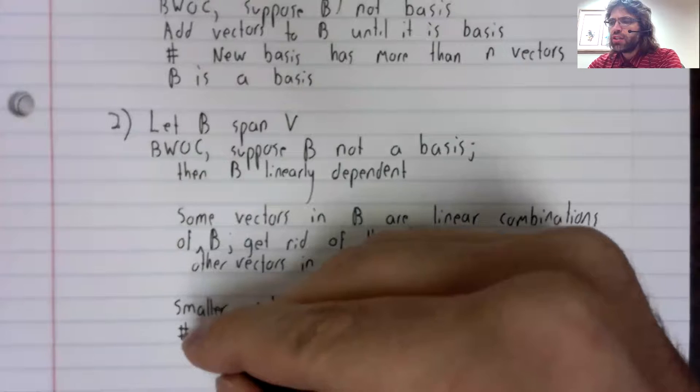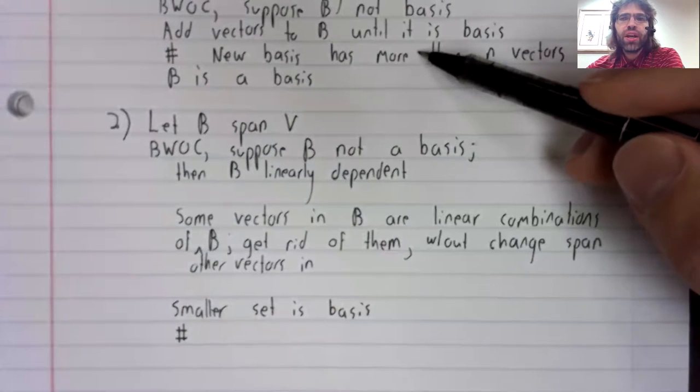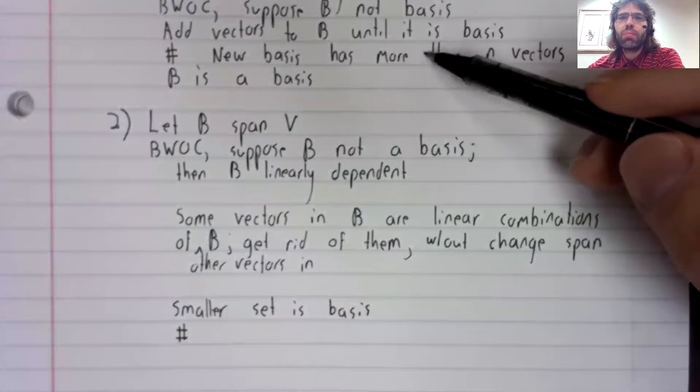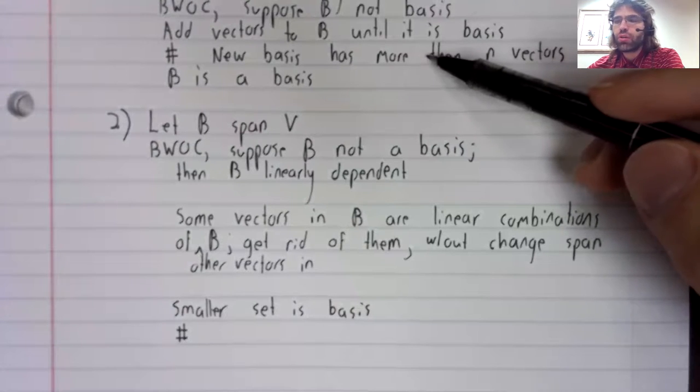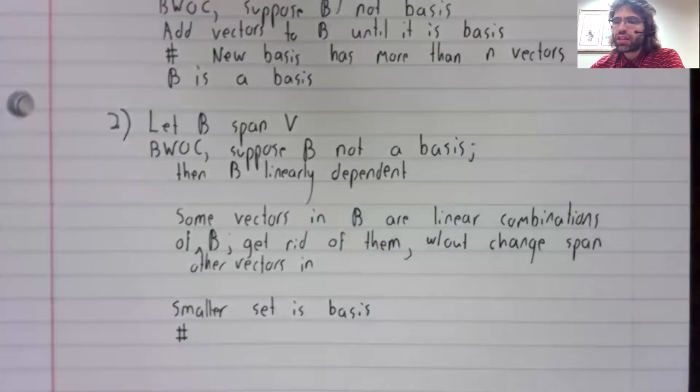And we run into the same problem we ran into above, that we now have a basis with the wrong number of vectors. Up here, our new basis had more than n vectors.